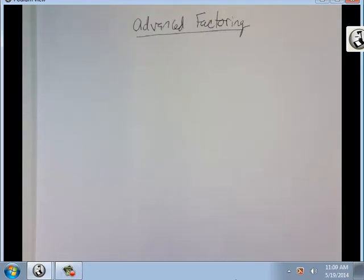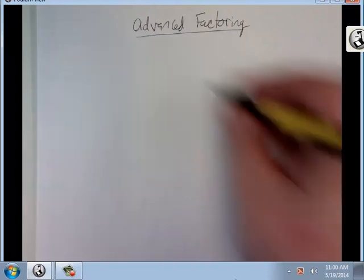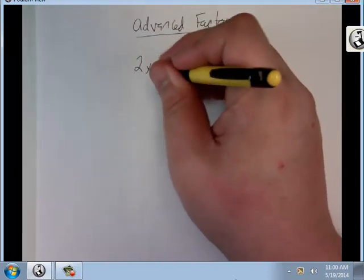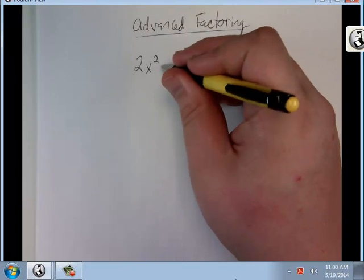All right, let's do some advanced factoring. Let's say you were given something like this, 2x squared minus 4x.